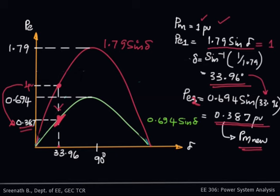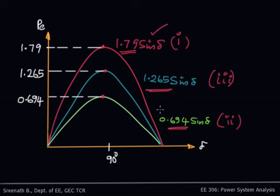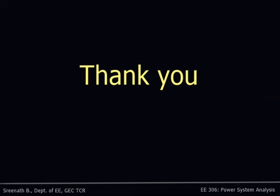In this way you can analyze this particular problem. In the numerical problem you are asked to draw all three power angle curves and find the Pmax values — 1.79, 0.694, and 1.265 — for the three conditions. If you complete the curves and the Pmax values, your problem is complete. Thank you.